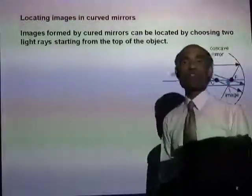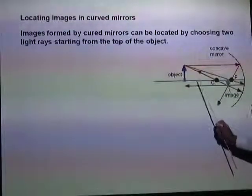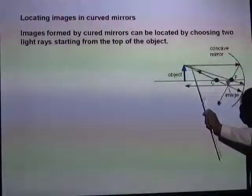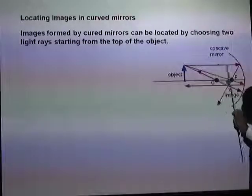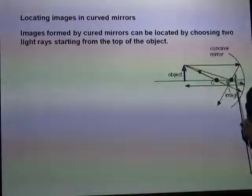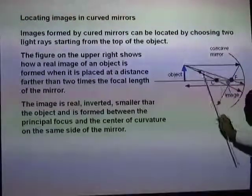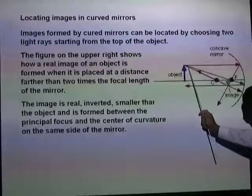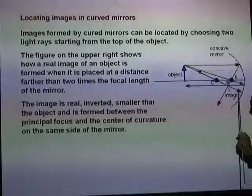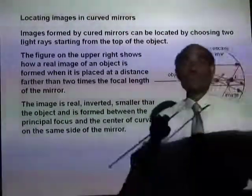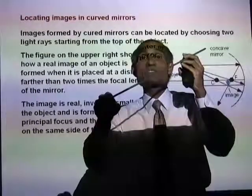Generally we use a point on the top of the object. If you look at the diagram, I have chosen a ray that is parallel to the principal axis. A ray parallel to the principal axis after reflection will go through the principal focus. If you choose a ray that is passing through the center of curvature, after reflection, that will go back because when the ray passes through the center of curvature it will be incident on the mirror at right angles.